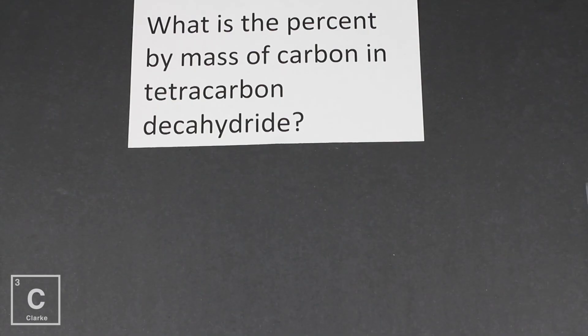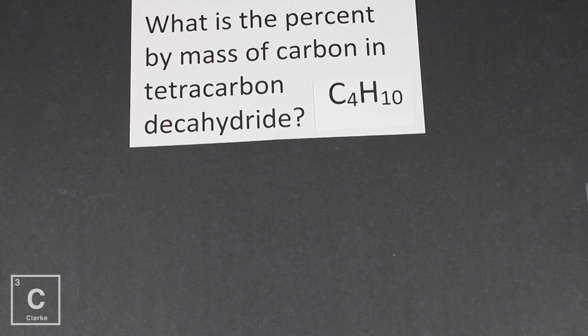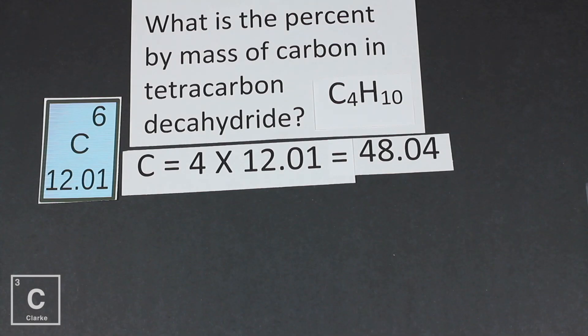Let's look at another example. What is the percent by mass of carbon in tetracarbon decahydride? Remember, tetra, that means four. Deca, that means 10. So our compound in question is C4H10. And the question wants to know the percent of carbon, but you've got to get the whole molar mass first. So we've got carbon. We've got four of them. Carbon's mass is 12.01. So four times 12.01 is 48.04.